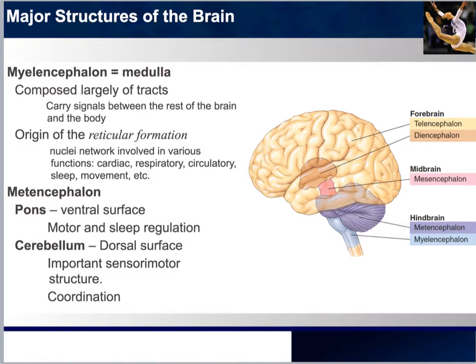The metencephalon — the other part of the hindbrain — is made up of the pons and the cerebellum. The pons is the purple nudge visible here, while the cerebellum is this large piece of the brain. The pons is on the ventral surface — meaning the bottom when referring to the brain, while dorsal would be on top. The pons is responsible for motor and sleep regulation.